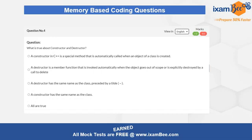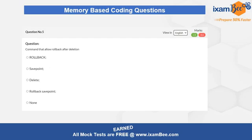The fourth question is about the constructor and destructor. There are several statements and you have to find out the correct statement about the constructor and destructor. The fifth question is related to the command that allows rollback after deletion. This is a very easy question because you can actually get the answer from the question itself — you should be smart enough to find the answer within seconds.